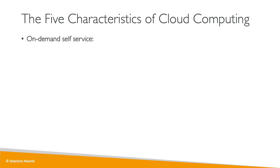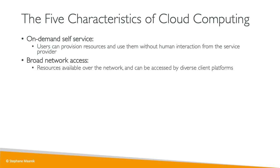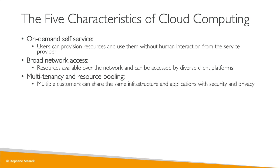Now, five characteristics of cloud computing. First, it's fully on-demand and self-service — users can provision resources and use them without anyone from AWS intervening. Second, broad network access — resources are available over the network and can be accessed in diverse ways. Third, multi-tenancy and resource pooling — not just us, but other AWS customers share the same infrastructure and applications while still having security and privacy. Multiple customers are served from the same physical resources — you, me, and other customers share this entire cloud data center.